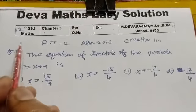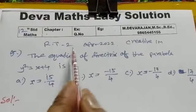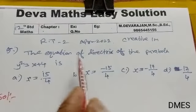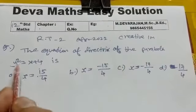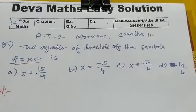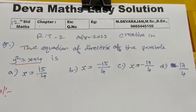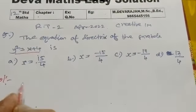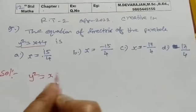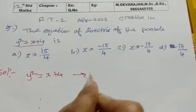Hi student, this is Deva. I am going to talk to you about 12th standard maths. PT-2, April 2022, creative program. The equation of directrix of the parabola y squared equals x plus 4. Solution: the parabola y squared equal to x plus 4, equation 1.